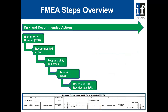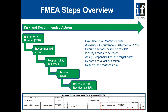Finalizing, we think of the risk priority number. We take recommended action if the risk is considered too high, identify responsibilities and timing for those actions, record what action was taken, and then rescore the RPN. We calculate the risk priority number, which is severity times occurrence times detection, prioritize action based on results, identify actions to be taken, assign responsibilities and target dates, record the actual actions taken, and rescore and reassess risk.